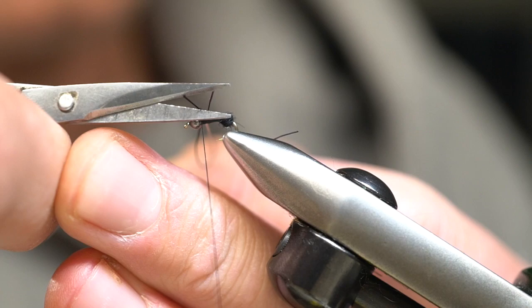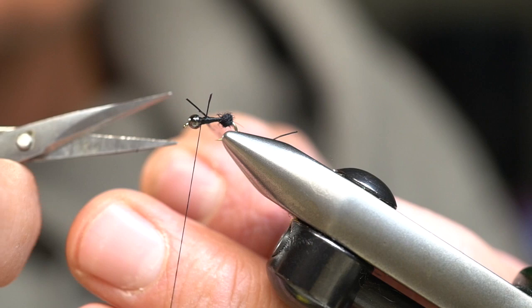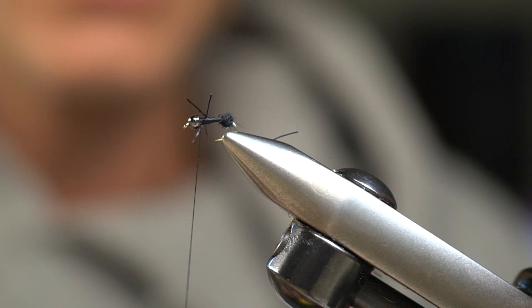Remember, with rubber legs, it's always easier to take off than to add on. So always cut long first, and if you need to trim, you can always trim.